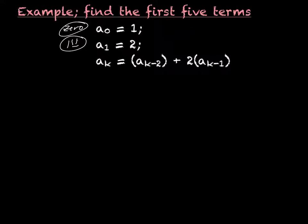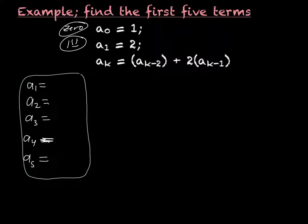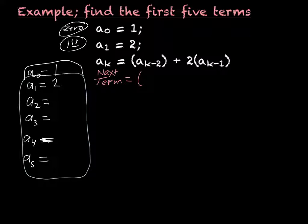We still have to find A sub 1 through A sub 5, but we just need that extra information. So we include A sub 0 equals 1 and A sub 1 equals 2. We're going to have to use both of the previous two bits of information to solve. We can rewrite the formula as: next term equals the previous term plus two terms ago.